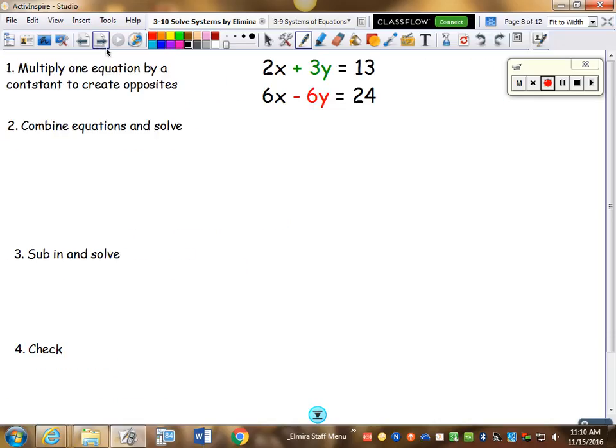So the second day is tougher because if we look at the problems that we're given, there's nothing that I can go ahead and just cross off. Because 2x and 6x, they don't cancel each other out. They make 8x. And a positive 3y and a negative 6y, they don't cancel each other out. I mean, the signs are opposite, but 3 and 6 are not the same number. So we can't just start off by canceling something out.